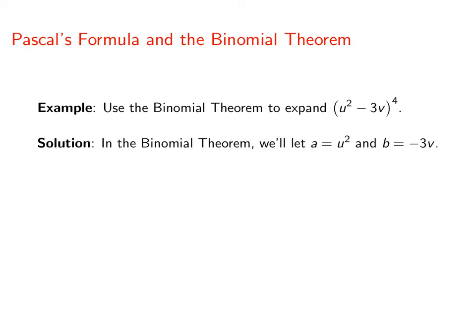Now when we use the binomial theorem, let's let a be equal to u squared and b be equal to negative 3v.